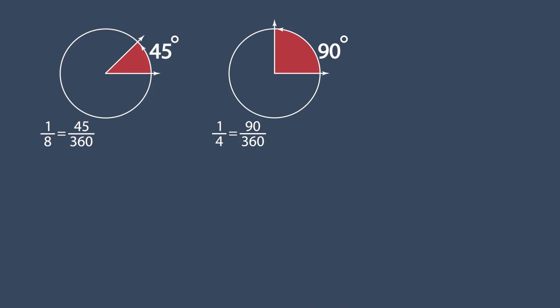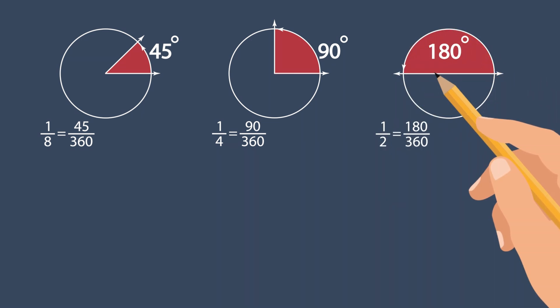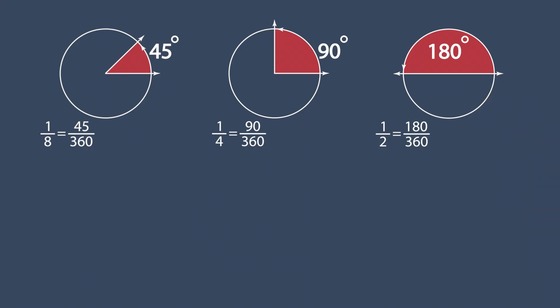Take a look at the straight angle. A straight angle is equal to 1 half of a circle. 1 half is equal to 180 over 360. So the measure of this angle is 180 degrees.